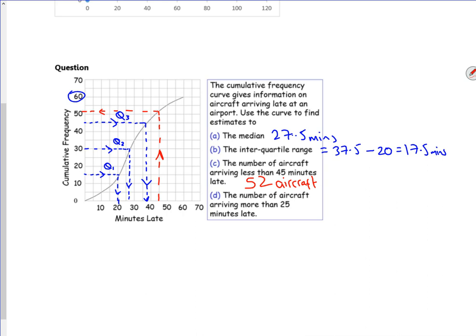And it says a number of aircraft arriving more than 25 minutes late. Right, so we have to do a backwards one at this point. So I've got 25 here. I've got 60 aircraft in total. So it's going to be 60 minus 25 is 35 aircraft. I'm ever so slightly different to the completed pack, just because I'm getting old and can't read the numbers properly.